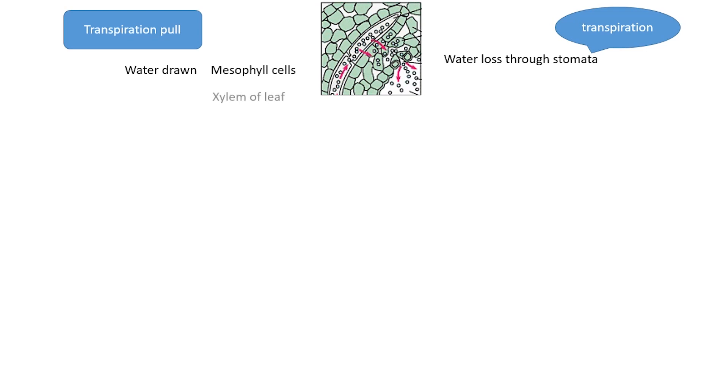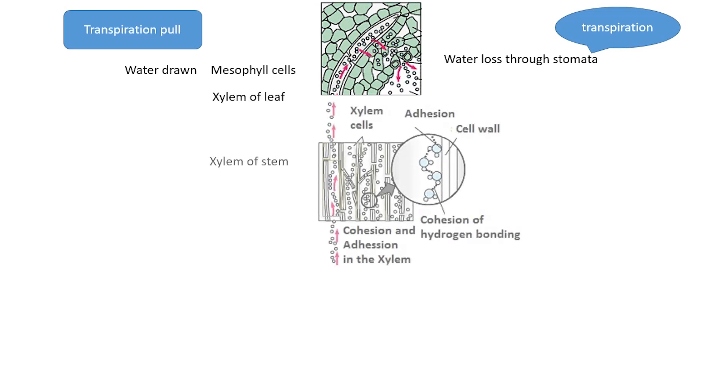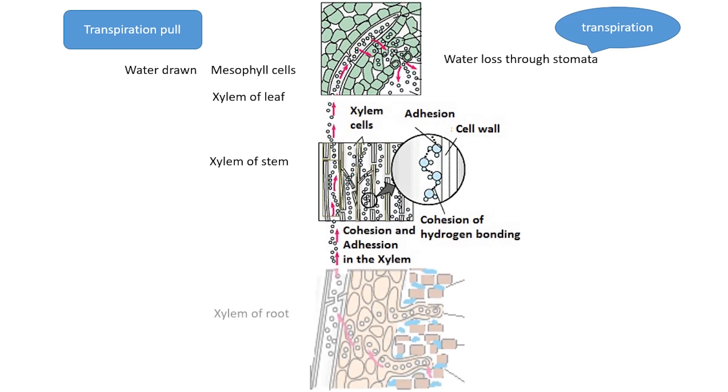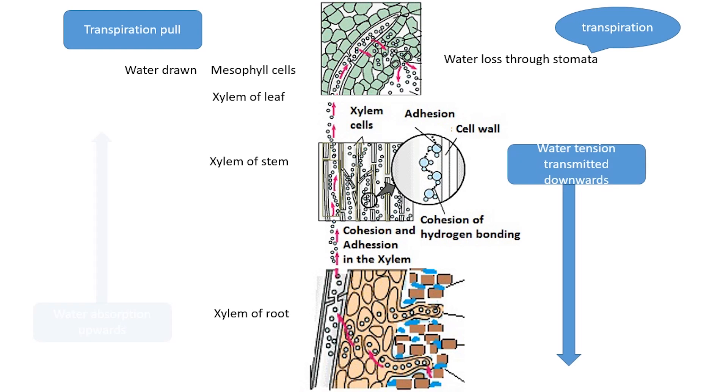The intercellular spaces then receive water from the mesophyll cells. The mesophyll cells in turn draw water from the xylem of the leaf. All of these creates a tension in the water column in the xylem elements of the leaves.